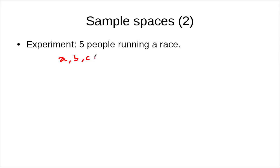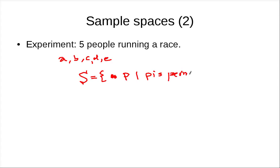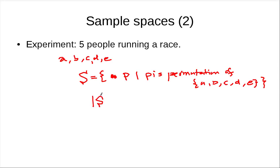If you have five people running a race and our outcome is the order that these people finish the race — assuming no ties — then the sample space S is the set of all permutations of the set {a, b, c, d, e}. The size of S in this case is five factorial.